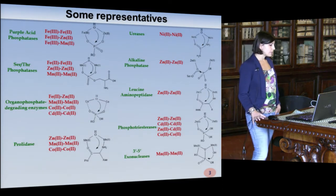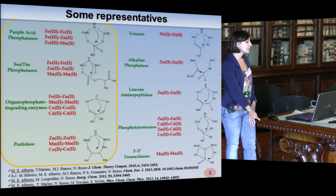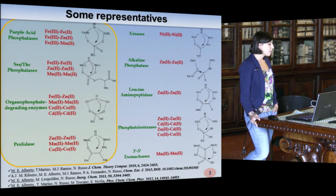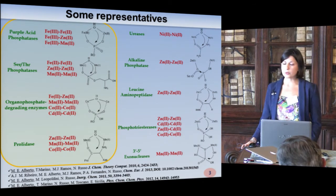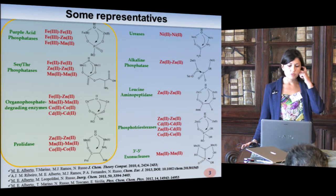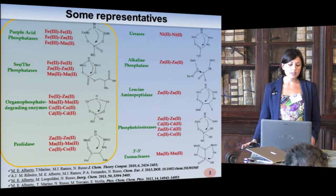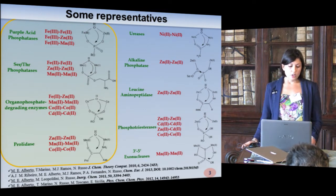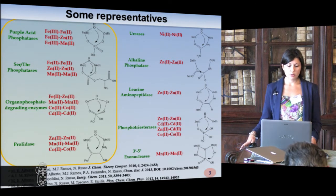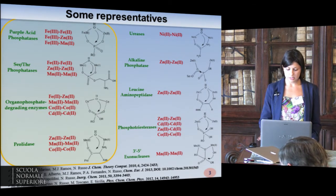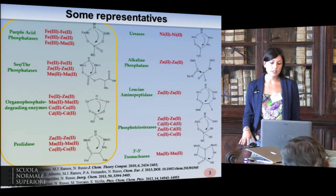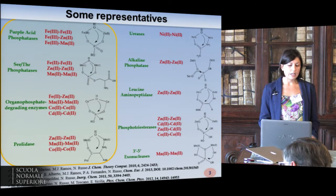Among them, there are some representatives we have already investigated: purple acid phosphatases, the only member of this family that carries out hydrolysis of monophosphate using a heterovalent active site with iron-3 combined with divalent metal ions; serine-threonine phosphatase, the topic of my talk; organophosphate-degrading enzymes that catalyze hydrolysis of diphosphate; and prolidase that catalyzes hydrolysis of peptides containing proline. Other members include alkaline phosphatase and leucine aminopeptidase. They are believed to share a common reaction mechanism, even if the identity of the nucleophile and the bimetallic cluster differ.